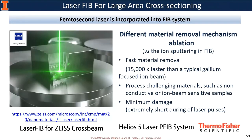Laser FIB is developed for extremely large area cross-sectioning. The material removal mechanism is laser ablation, enabling very fast material removal — 15,000 times faster than typical gallium ion beam. It can also process challenging materials such as non-conductive or ion-beam sensitive samples, and damage is minimized because of the extremely short duration of the laser pulse.